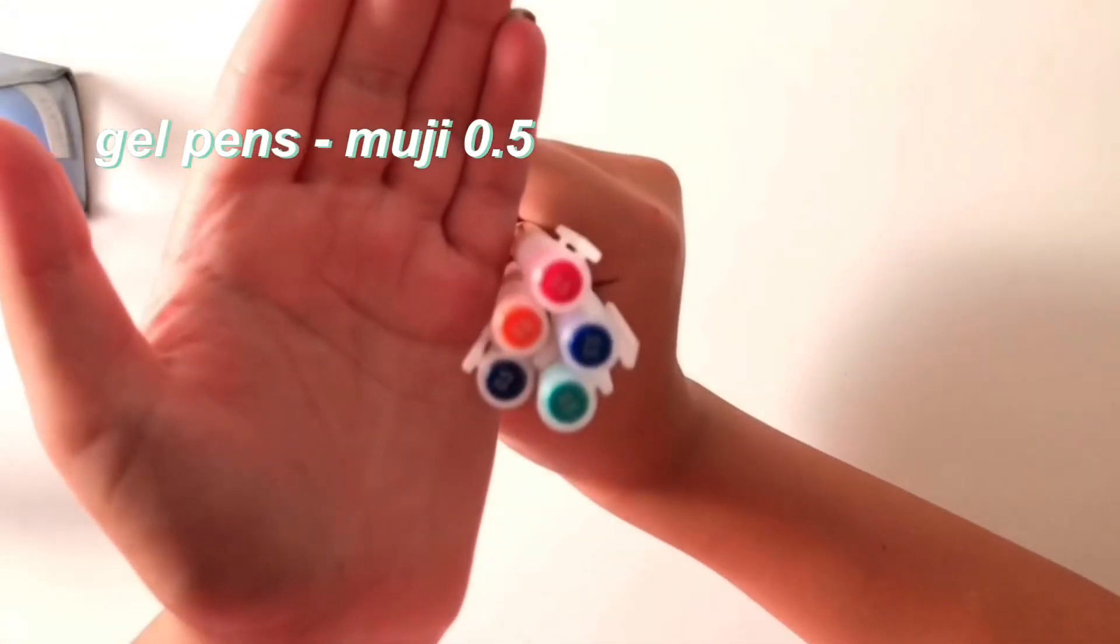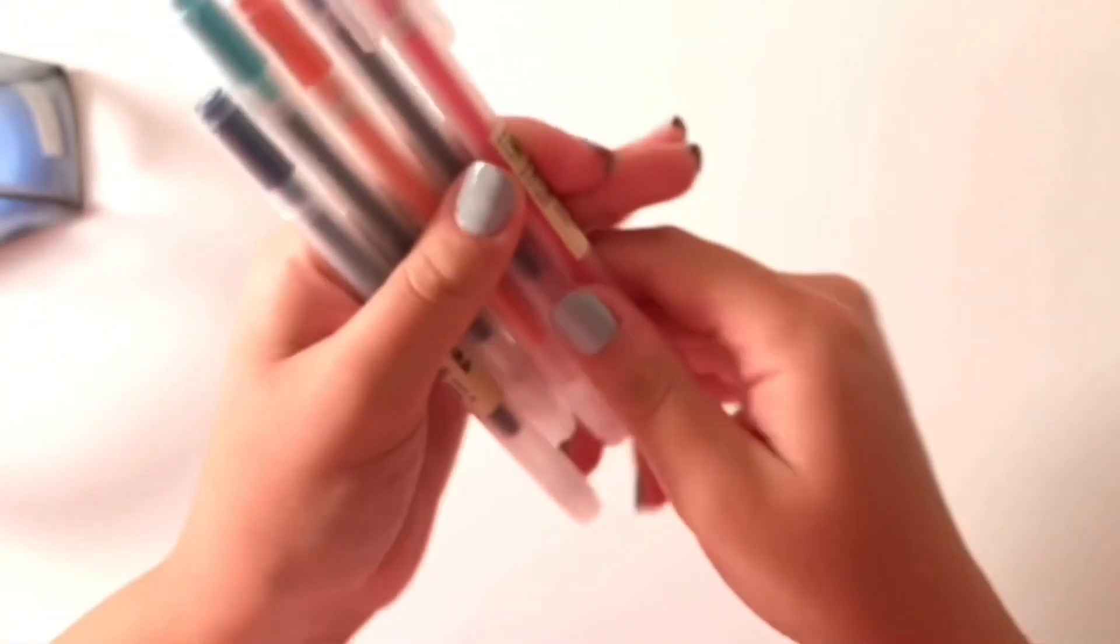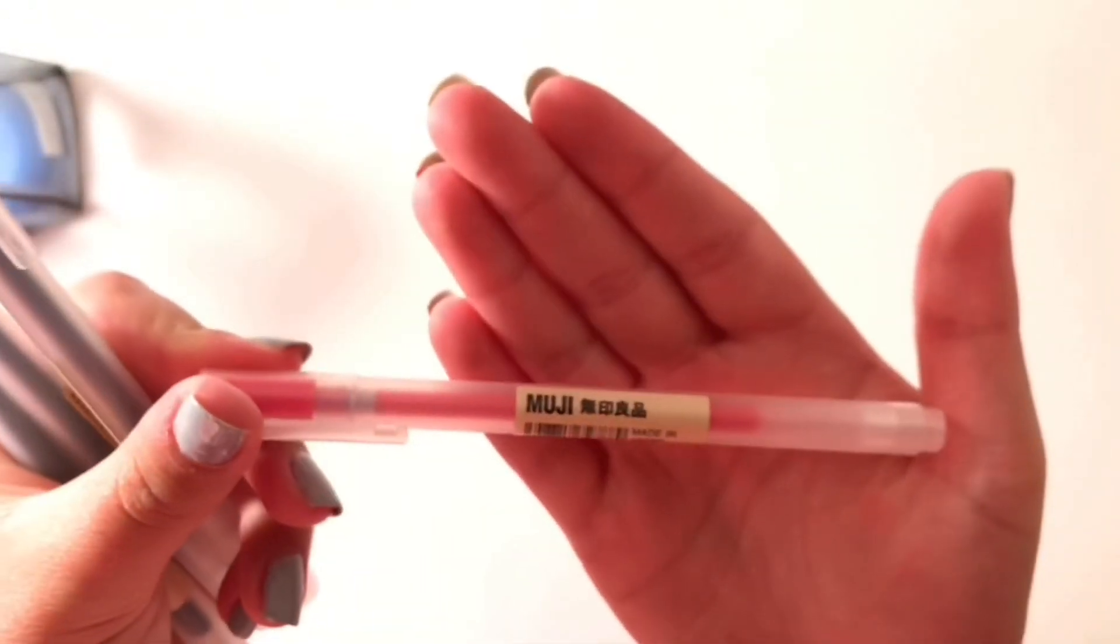Next these are some of my gel pens. These are all Muji 0.5 ones in various colors. I have the pink, blue, orange, teal, and blue black.